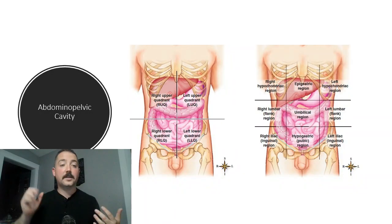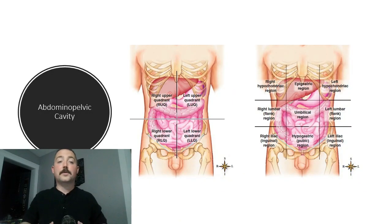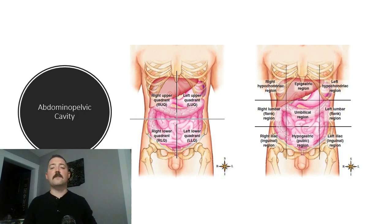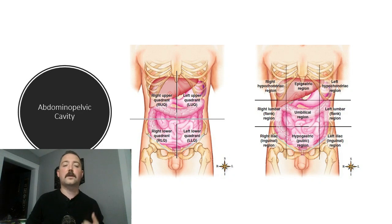A little more inferiorly, you have your abdominal pelvic cavity, which can also be subdivided into the abdominal cavity and the pelvic cavity. The abdominal cavity has most of your soft and squishy organs, like your stomach, gallbladder, and spleen.